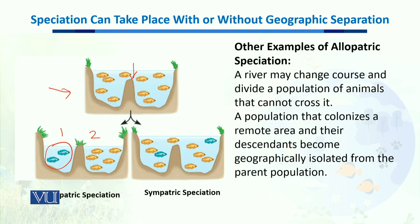Another example: a river may change course and divide a population of animals that cannot cross it. When they cannot cross, they become separated by the river and gene flow among them stops. As a result, this population becomes separated into two different species.